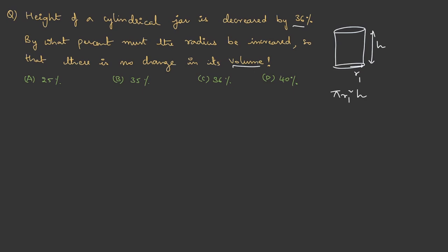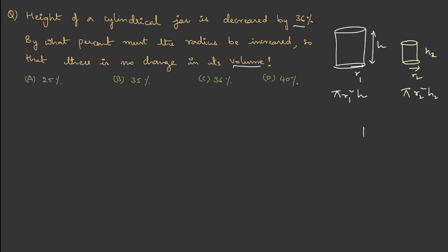For this one, the height has been decreased. So, instead of h, it could be h2 and this is some r2. This volume will be pi r2 square h2, but they have given a relation that h2 is decreased by 36 percent. That is left out quantity is 64 percent. That is 64 by 100 into h.